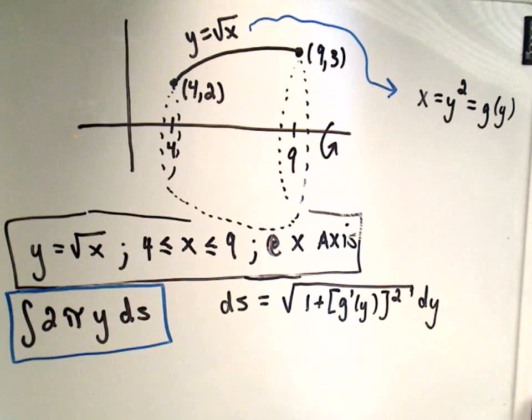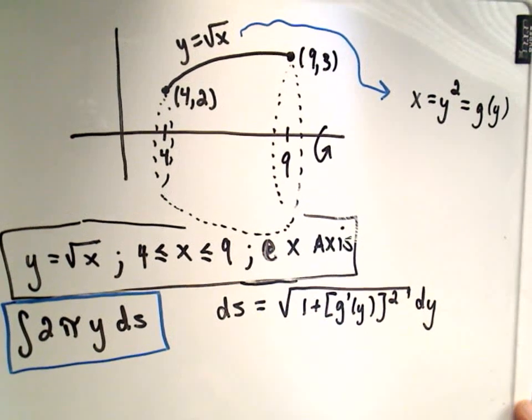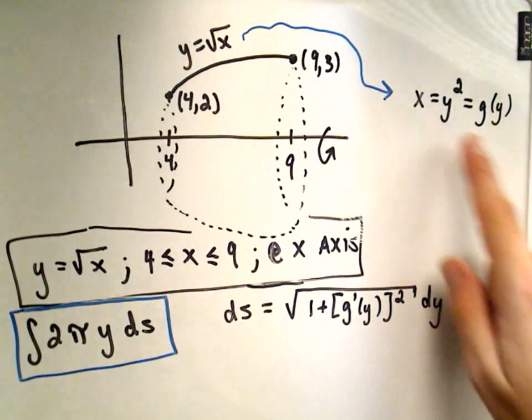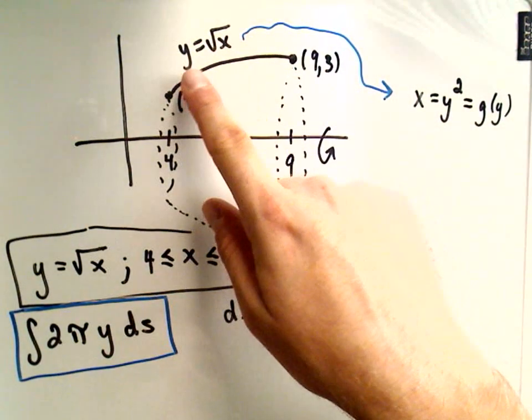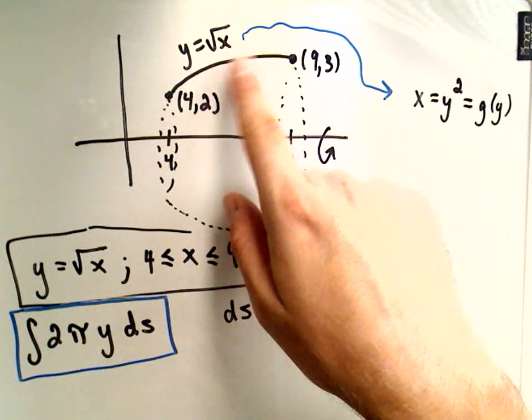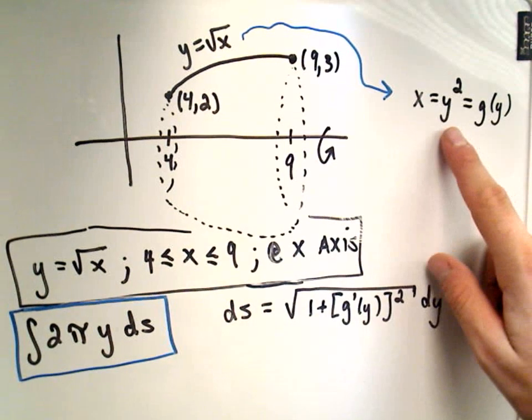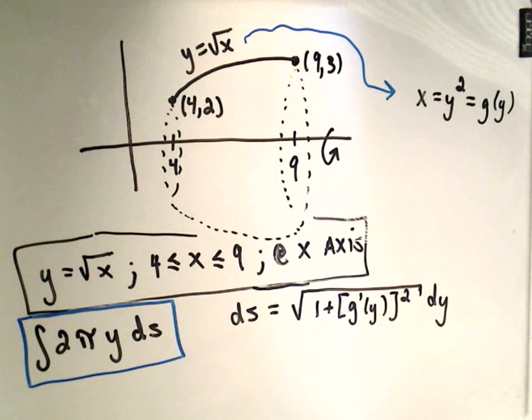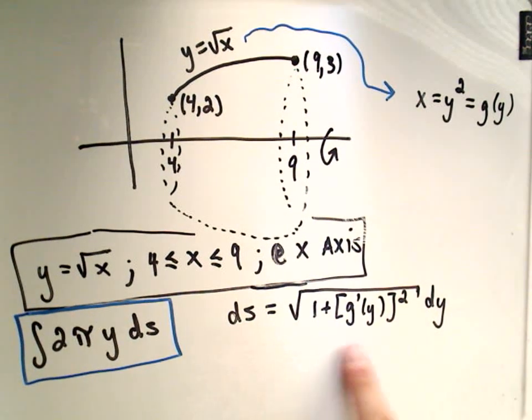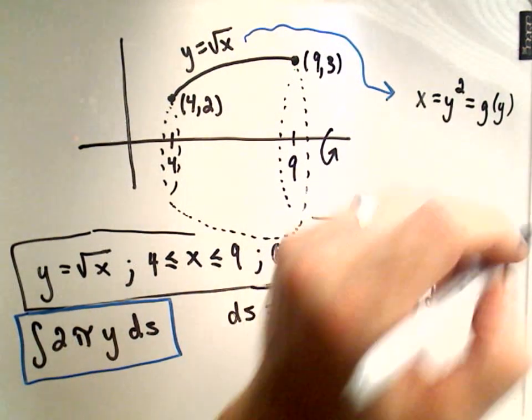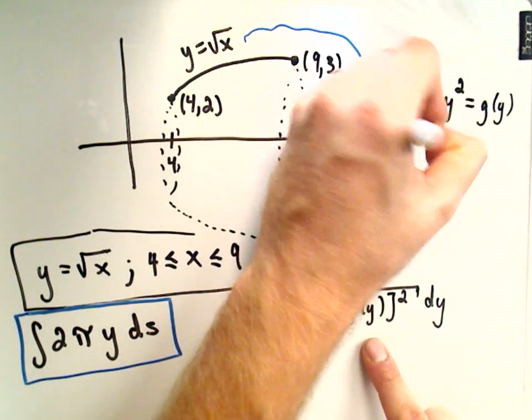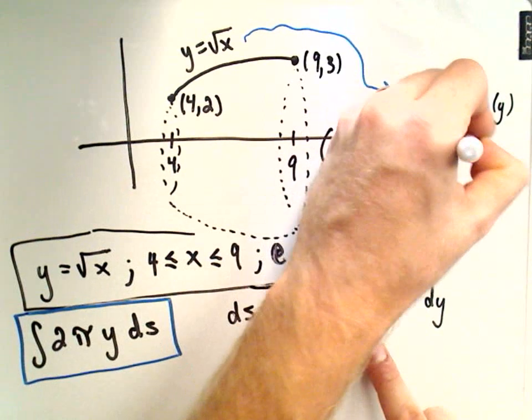Okay, and this is going to kind of illustrate when you can at least algebraically switch back and forth. It's when you're going to be able to take your equation, and if it's already in terms of x, it should be algebraically easy to get in terms of y and vice versa. If not, you're going to be a little more limited as to the ds formula that you use. Okay, so it says all we have to do is take the derivative, so g prime of y is going to be 2y.